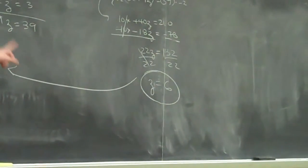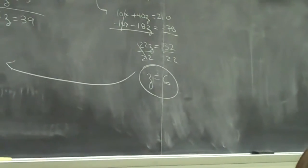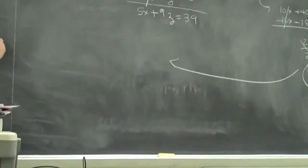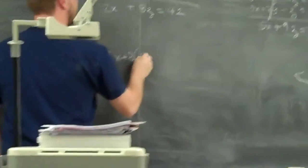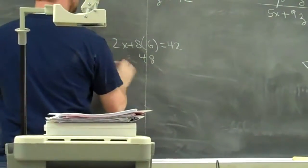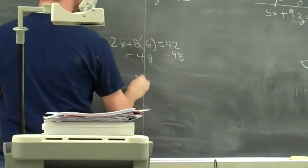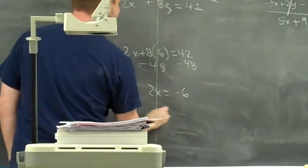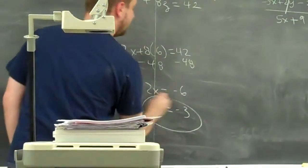If I come back here, I know z equals 6, then I can find x. So if I do 2x plus 8 times 6 equals 42, that's 48, and I'm going to subtract the 48 off. 2x equals negative 6, so x equals negative 3.